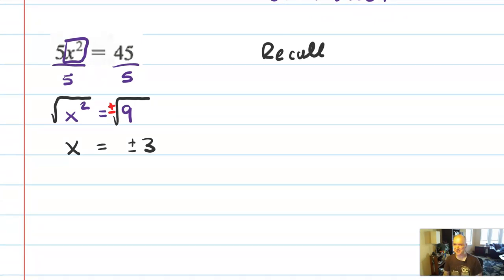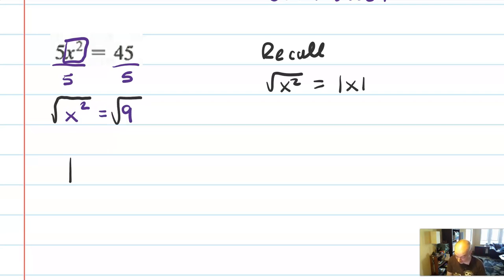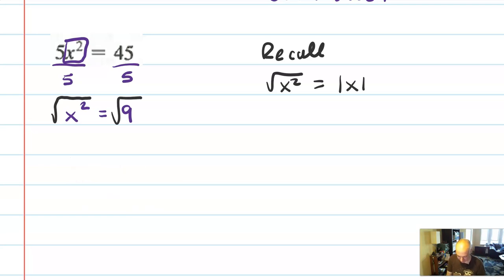Remember from earlier that the square root of x squared is not x — it's absolute value of x. So really what we should write is: square root of x² equals square root of 9, so absolute value of x equals positive 3, and x should be plus or minus 3. No one ever really writes it, but we just go ahead and say x is plus or minus 3.